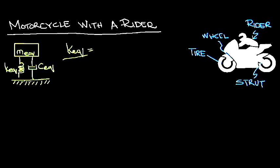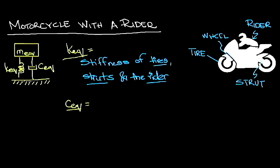Here K with the subscript EQ depicts the equivalent stiffness of the system which includes the stiffness of the tires, struts and the rider.